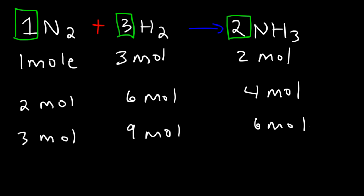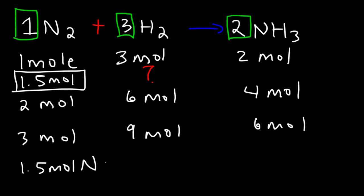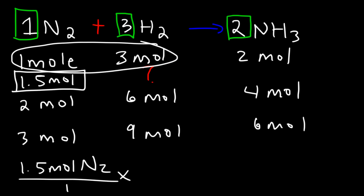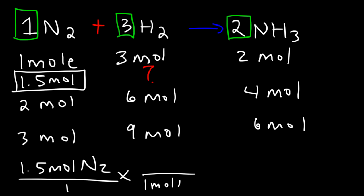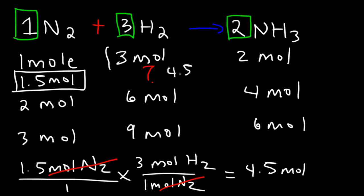Here's a question: if we have 1.5 moles of N₂, how many moles of H₂ will react with 1.5 moles of N₂? Start with what you have — 1.5 moles of N₂. The conversion factor is the molar ratio between N₂ and H₂. For every 1 mole of N₂ that reacts, 3 moles of H₂ react with it. The units moles of N₂ cancel, giving 1.5 times 3, which is 4.5. This makes sense because 4.5 is right between 3 and 6, just as 1.5 is right between 1 and 2.